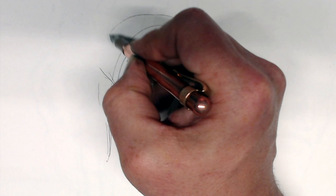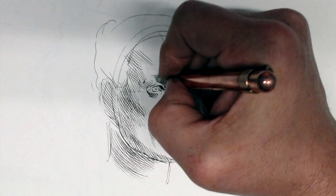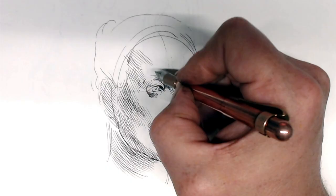As is to be expected with a nib this fine, there is quite a bit of feedback, but it's not unpleasant or so scratchy as to eat through your paper even when you go over your lines quite a few times. The other thing that's nice is that the flow is on the dry side, so the ink dries quickly, an advantage if you plan on using this pen in combination with ink wash or watercolor.